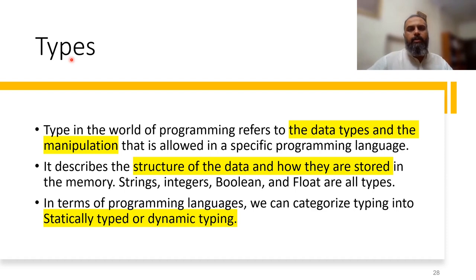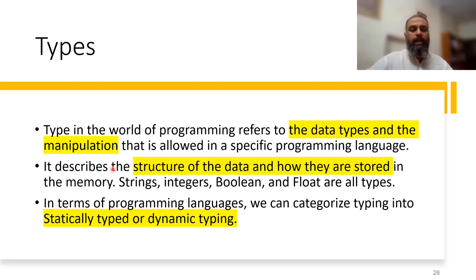There are two meanings of 'types' in programming: data type and programming type. In programming, 'type' refers to the data type and manipulations allowed in a specific language. It describes the structure of data, how data is stored in memory, and what operations can be performed on it. Examples of data types are strings, integers, booleans, and floats.